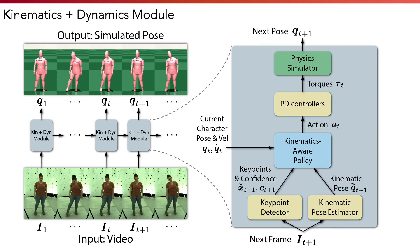Inside the module, we use a kinematic pose estimator such as VIBE to get an initial kinematic pose from the image. We also use a keypoint detector to get 2D keypoints and their confidence. We then use a kinematics-aware policy that takes as input the kinematic pose, the keypoints, and the current character pose and velocity to produce an action. The action is converted by PD controllers to joint torques and input into the physics simulator to produce the next pose of the character.